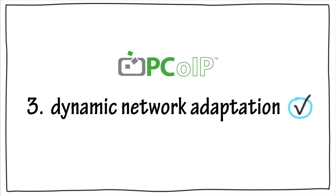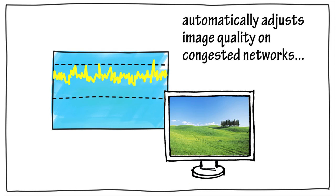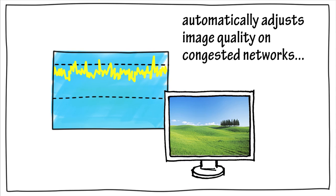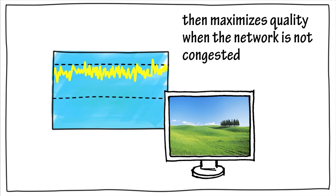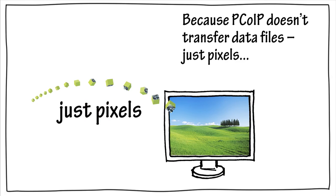Thirdly, the PCoIP protocol dynamically adapts to network conditions. PCoIP image quality settings can be easily configured to manage bandwidth use, and PCoIP adaptive encoders automatically adjust image quality on congested networks within the limits you set, then resume maximum image quality when the network is no longer congested. Because the PCoIP protocol does not transfer data files, just the pixels themselves, it makes sense to use a real-time protocol to ensure a responsive interactive remote user experience.